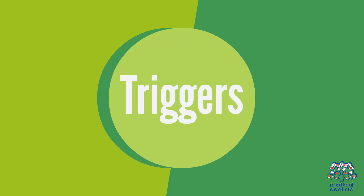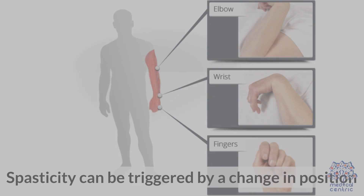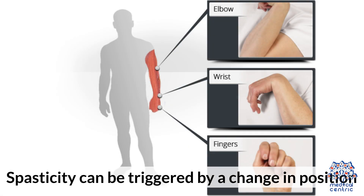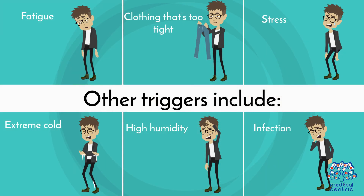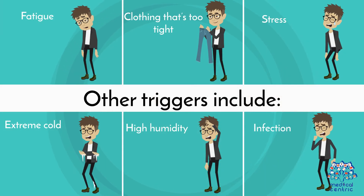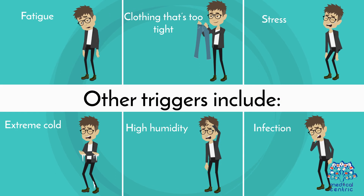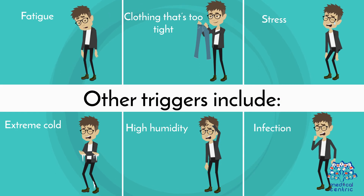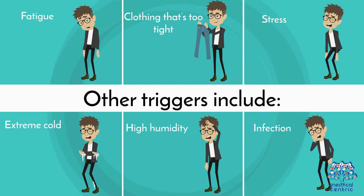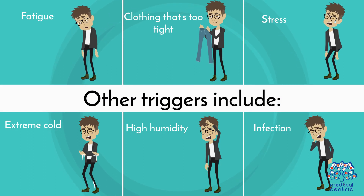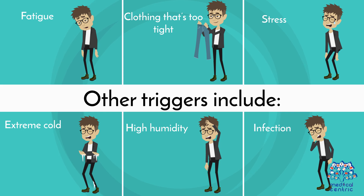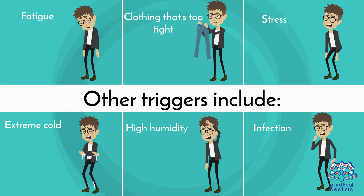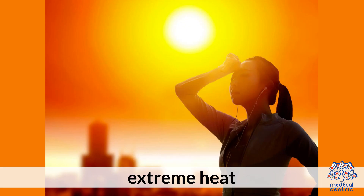Triggers: Spasticity can be triggered by a change in position. Other triggers include fatigue, clothing that's too tight, stress, extreme cold, high humidity, infection, and extreme heat.